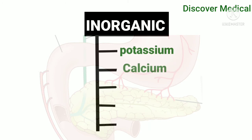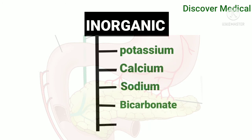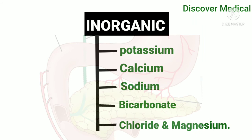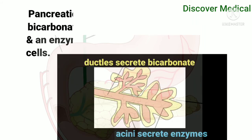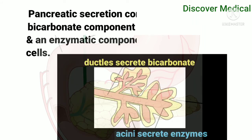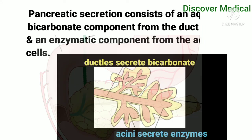Inorganic components include potassium, calcium, sodium, bicarbonate, chloride, and magnesium. Pancreatic secretion consists of an aqueous bicarbonate component from the duct cells and an enzymatic component from the acinar cells.